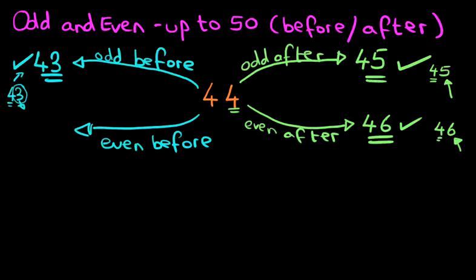What number comes before 43? The number before 43 is 42. Let's check if this is an even number. We're going to ignore the 4 and concentrate on the 2. Let's go through the even numbers from 0, counting in 2's: 0, 2. That's right — 2 is an even number. Therefore 42 is an even number. Now it looked difficult to begin with, but wasn't that nice and simple and very straightforward.